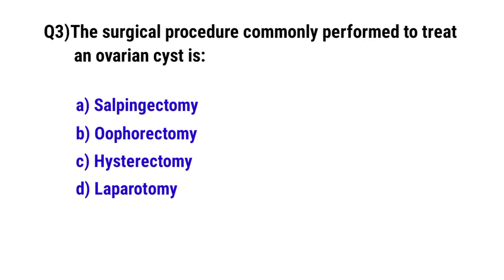Question number three: The surgical procedure commonly performed to treat ovarian cysts. The correct option is B, oophorectomy.